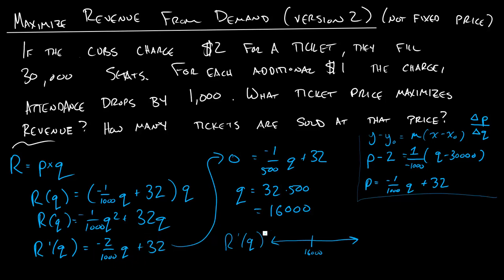something less than 16,000, you would have a positive number. And to the right of 16,000, you get a negative number telling you that this thing does indeed maximize your revenue.